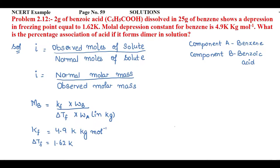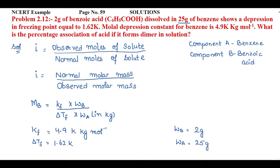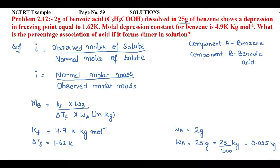Here wb refers to the actual weight of benzoic acid, which is 2 g. wa is the actual weight of benzene, which is 25 g. However, as per the formula, we need to convert wa to kg. Since 1 g = 1/1000 kg, 25 g becomes 25/1000 = 0.025 kg.